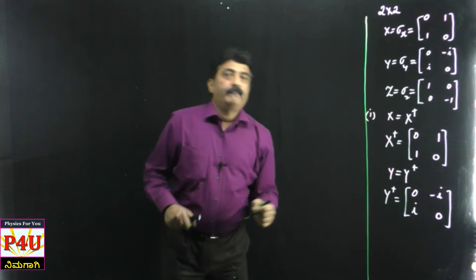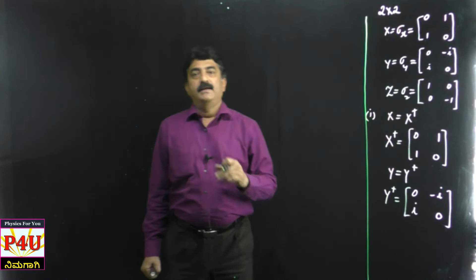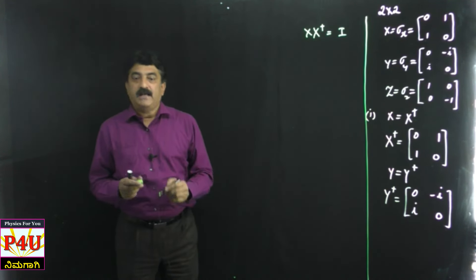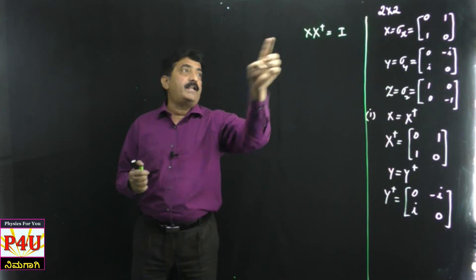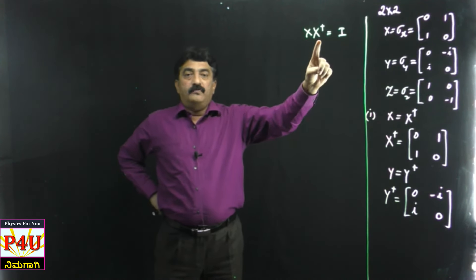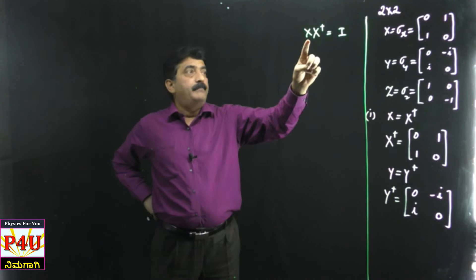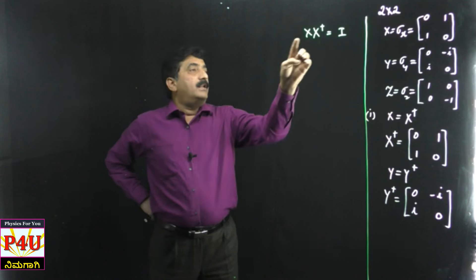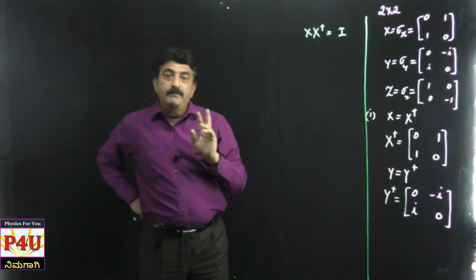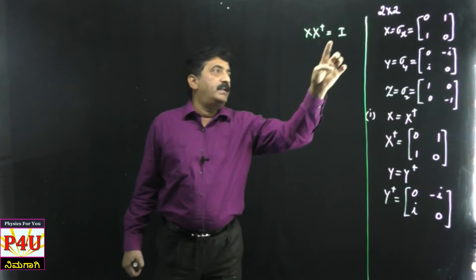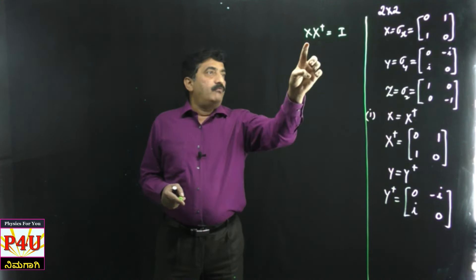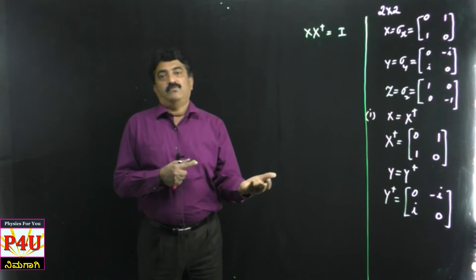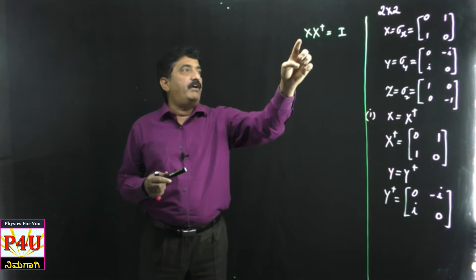The second property: if you take X and X†, or Y and Y†, or Z and Z† as a product, it is going to give you I - the identity matrix. This is the unitary property. If the Hermitian of a matrix multiplied with the same matrix gives identity, then the matrix is unitary. That means X is a unitary matrix. Similarly, YY† = I and ZZ† = I.